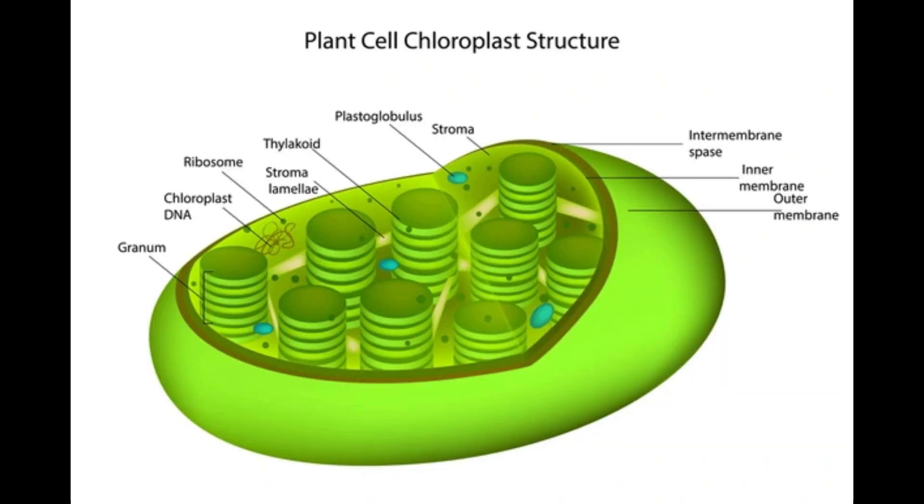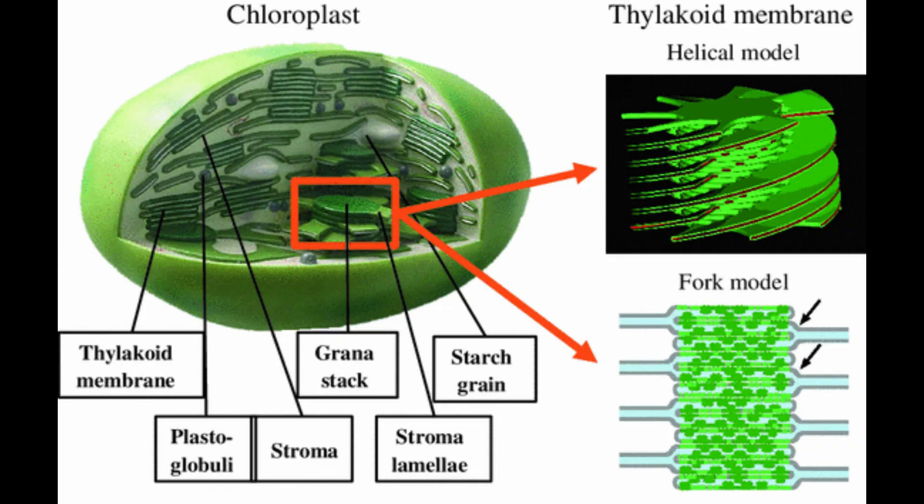Let's study the detailed diagram of a chloroplast. The parts of a chloroplast such as the inner membrane, outer membrane, intermembrane space, thylakoid membrane, stroma, and lamella can be clearly marked out.